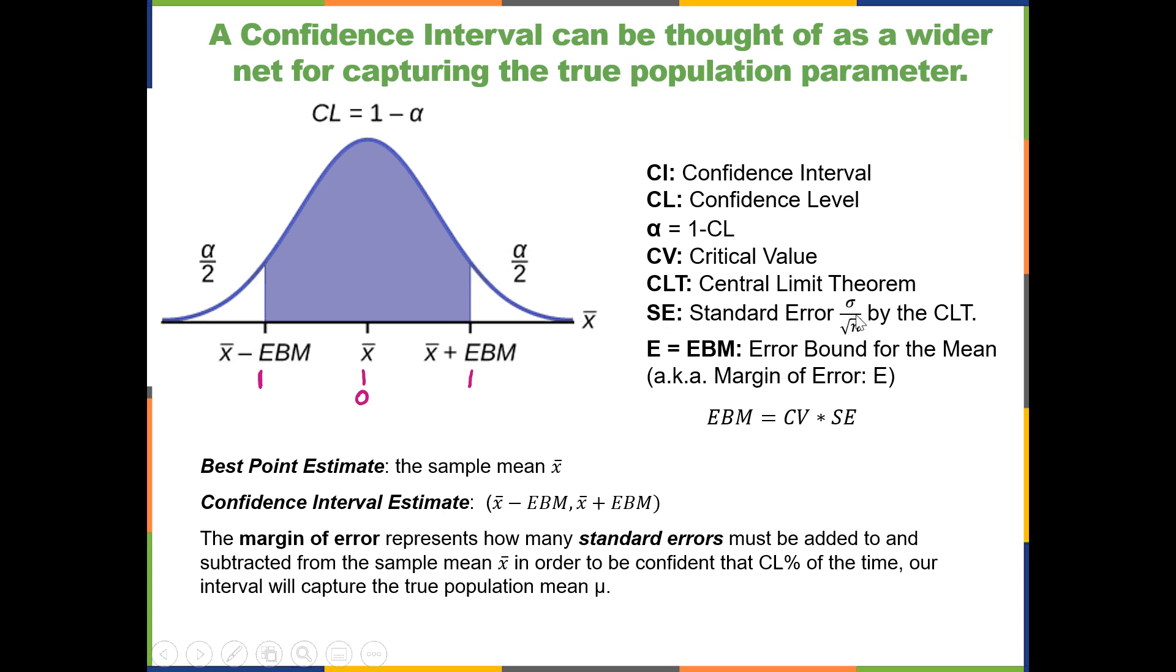SE is the standard error. E, or EBM, is the error bound for the mean, also known as the margin of error.